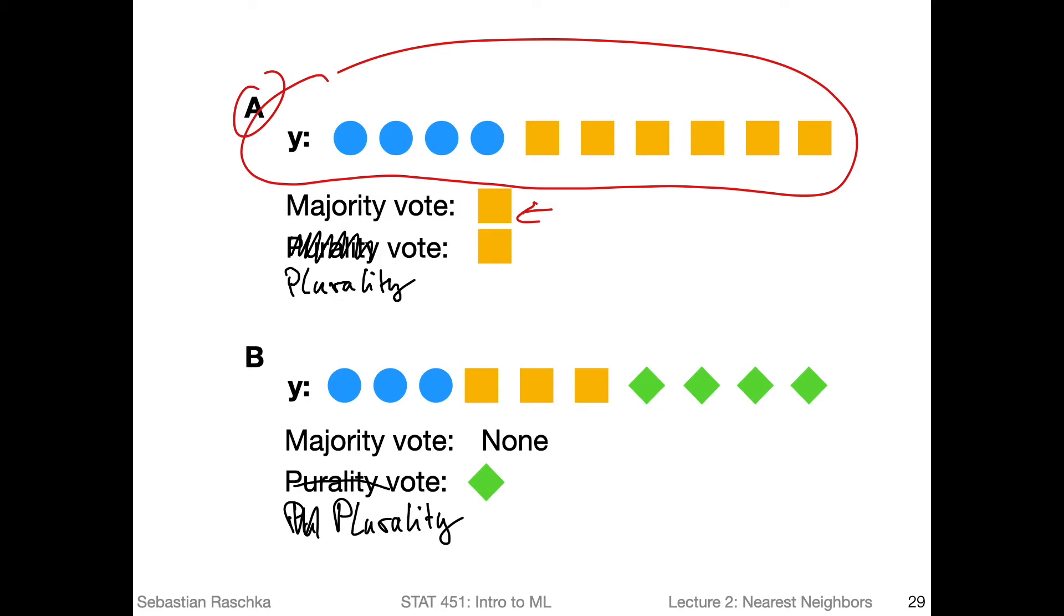Here in the bottom example, example B here, however, we don't have a majority vote because there's, if we have three classes here, there's not necessarily anything that has more than 50%. So for example, if we would have one circle, one square and the remainder would be these green diamonds, then the green diamond would be the majority vote because we would have more than half of the data points as diamonds. But here in this case, there is no symbol. So the square, the circle and the diamond, none of those reaches more than 50%. So we don't have a majority here if we are strict with the words.